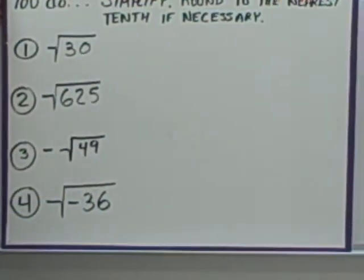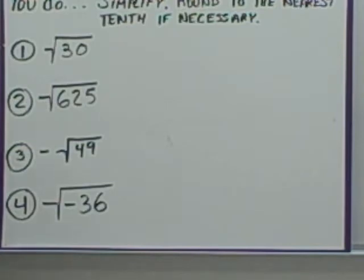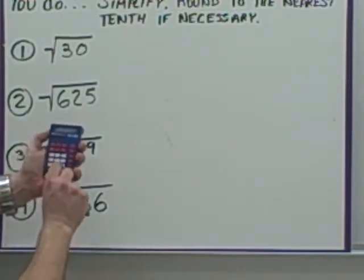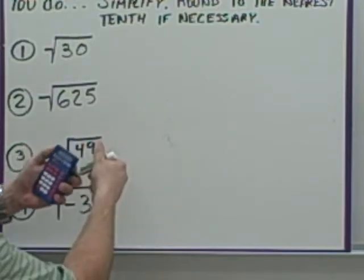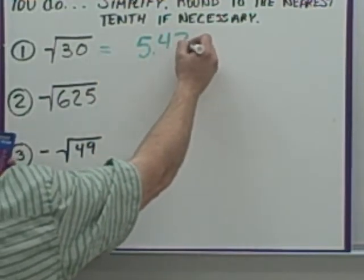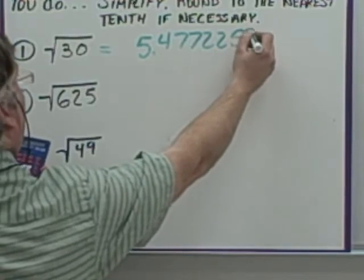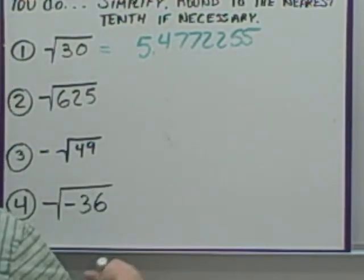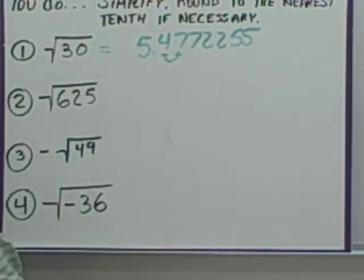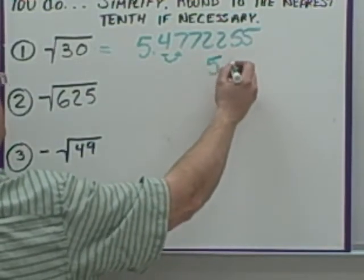Now for some practice problems — pause the video to try them. Welcome back. For number one, the square root of 30: type 30 into your calculator, hit square root, and you get 5.4772255... It says to round to the nearest tenth. The digit after the tenth place is greater than 5, so the final answer is 5.5.